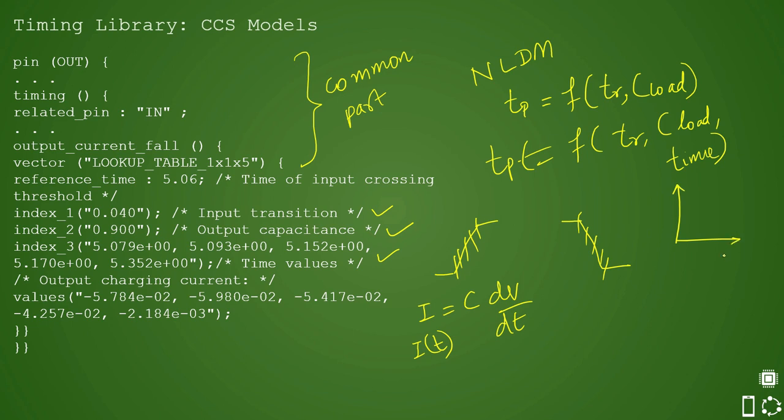In NLDM you had input transition and output load and you were calculating the delay based on that. These were your TP values, propagation delay values. Now you have one more additional parameter in the graph and that is time. So based on time varying propagation delay you will get, and that is an additional index in your library that is present as time value. The difference that is asked in the interview is what is the major difference why do we need a CCS model.